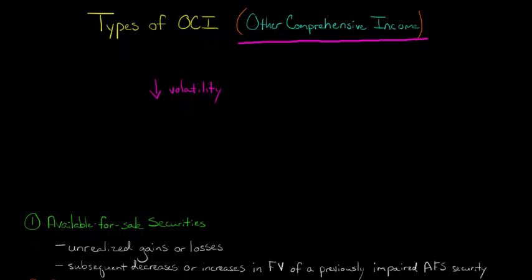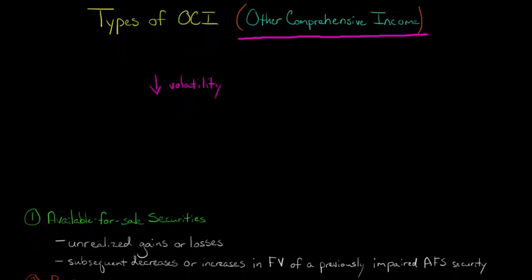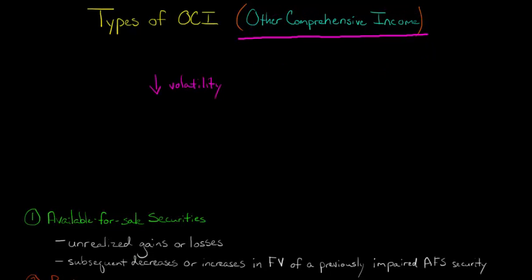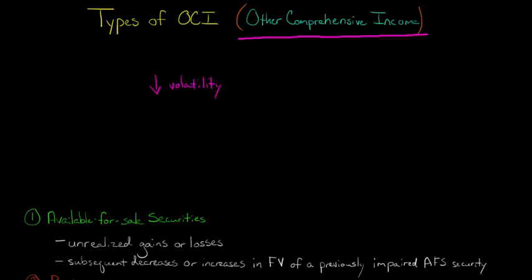Available-for-sale securities can affect other comprehensive income in a couple of different ways. One is when there's an unrealized gain or loss on an available-for-sale security. Unrealized means you haven't sold the security yet. When you do sell the security, it will flow through earnings. But when it's unrealized and you haven't sold the security yet, it's going to go through other comprehensive income.